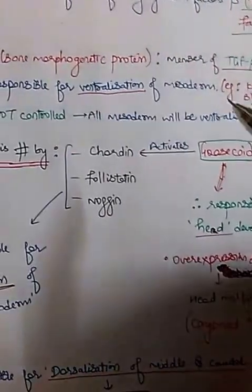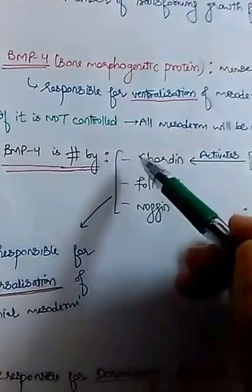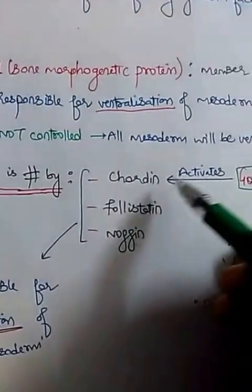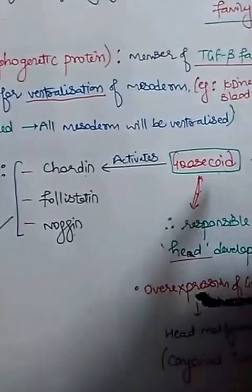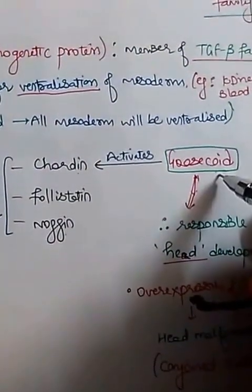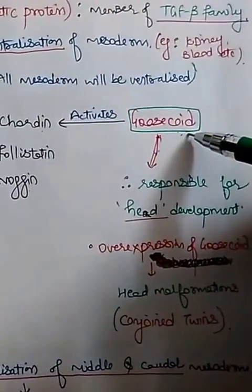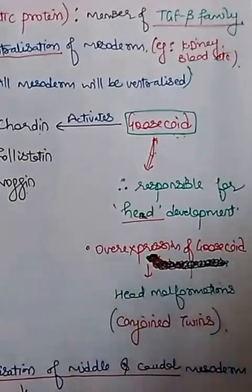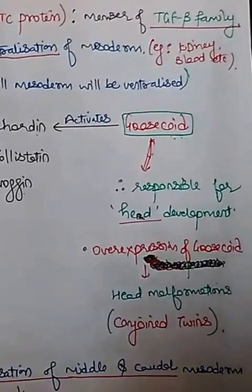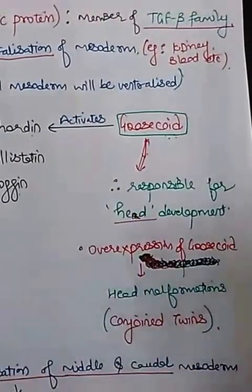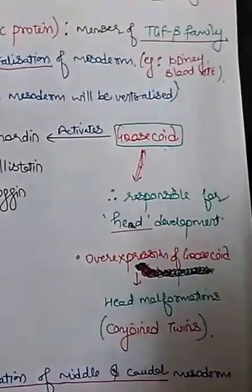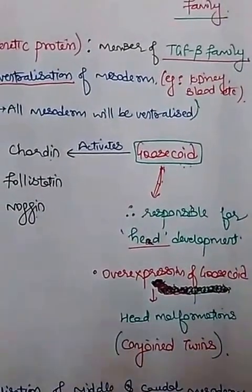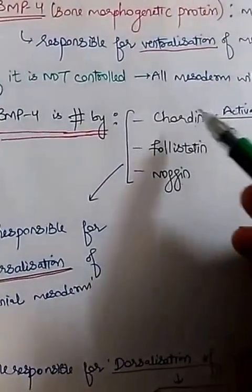To prevent uncontrolled ventralization, BMP4 is inhibited by some transcription factors: chordin, follistatin, and noggin. Chordin is activated in turn by the transcription factor goosecoid. Goosecoid is especially responsible for head development, so if it is over-expressed or under-expressed, it leads to head malformation. Over-expression leads to duplicate heads, forming conjoined twins with the same body but two heads.